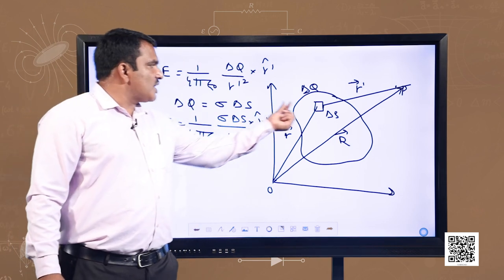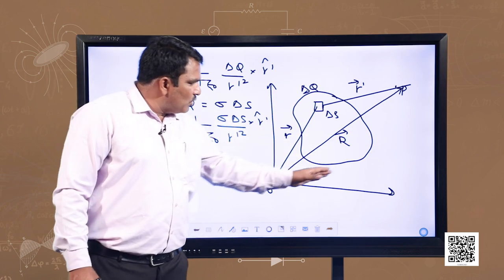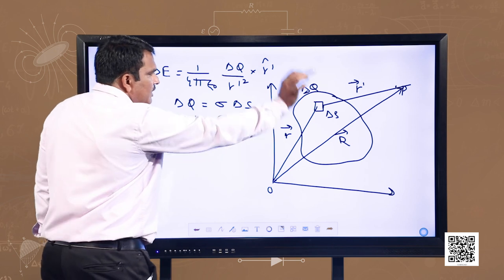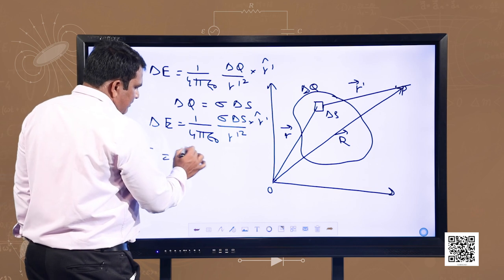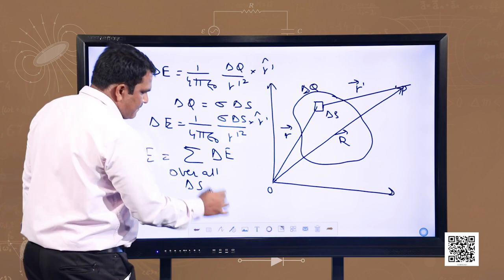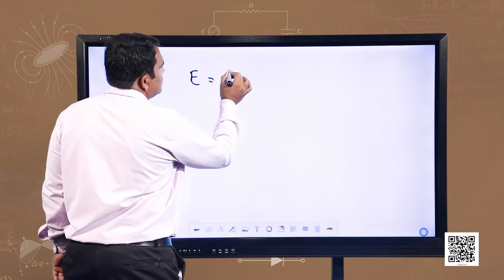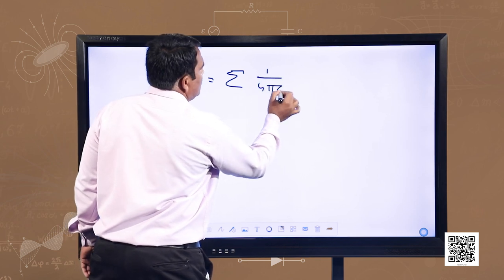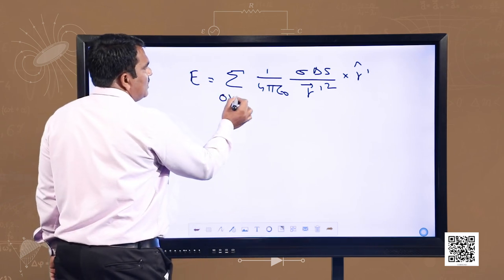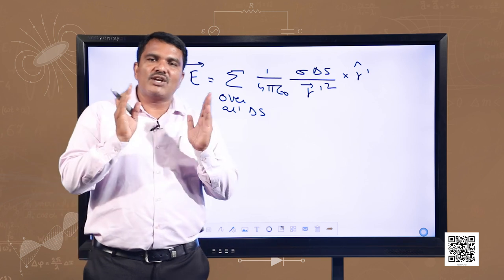This is the electric field due to the charge contained in this small area element. To find the electric field due to the whole charge on the surface, we do a summation over all area elements. The net electric field E equals the summation of 1 over 4π epsilon₀ times sigma delta S divided by r dash squared, multiplied by r dash cap, summed over all delta S. This is the electric field due to continuous surface charge distribution.